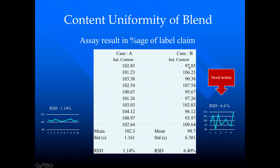In Case B, here are the results from 10 different locations. The mean assay result is 99.7% and the standard deviation is 6.381. Calculating the RSD from this standard deviation and mean gives an RSD of 6.4%.